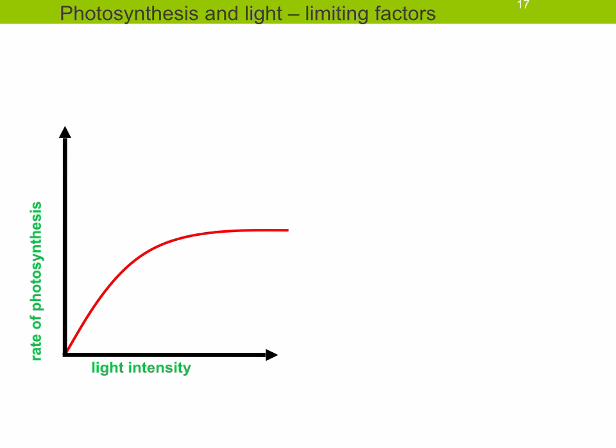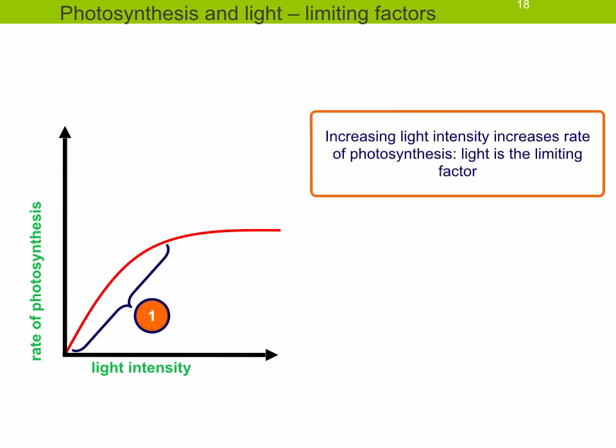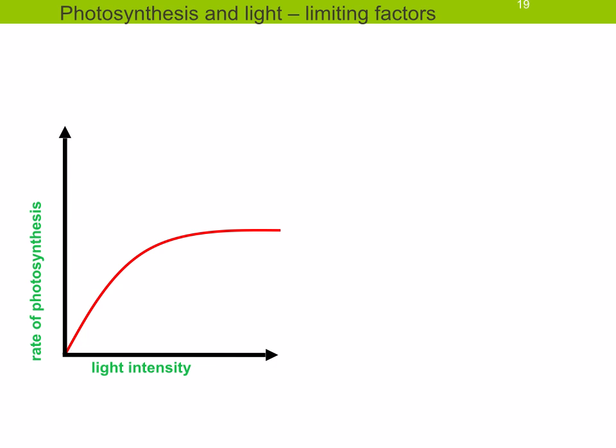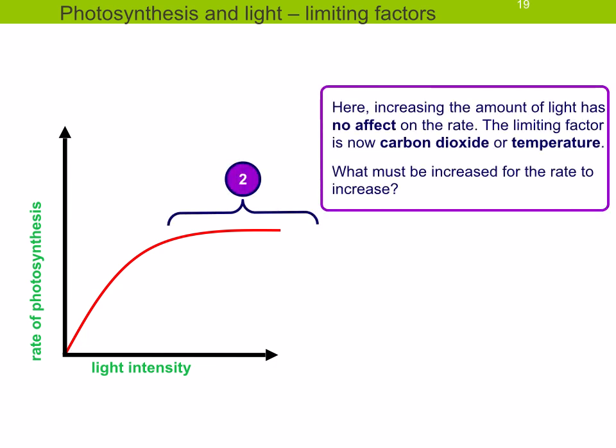Notice how the rate of photosynthesis increases with light intensity up to a certain point, then it plateaus. At low light intensities, increasing the light intensity increases the rate of photosynthesis, so light is the limiting factor. Once the graph plateaus, increasing the light intensity has no effect on the rate. The limiting factor is now something else, like carbon dioxide concentration or temperature.